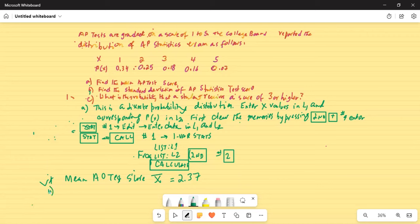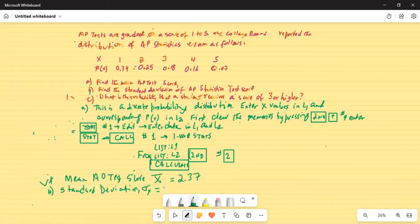So part B is standard deviation. Standard deviation is sigma X and that is equal to 1.286.